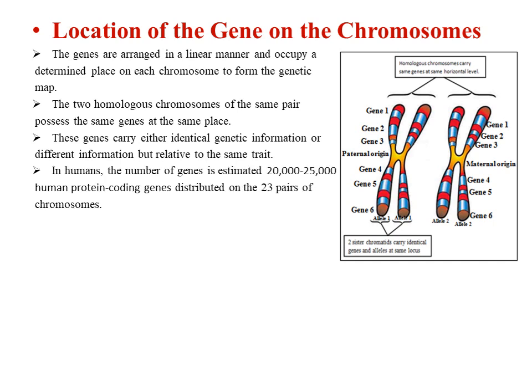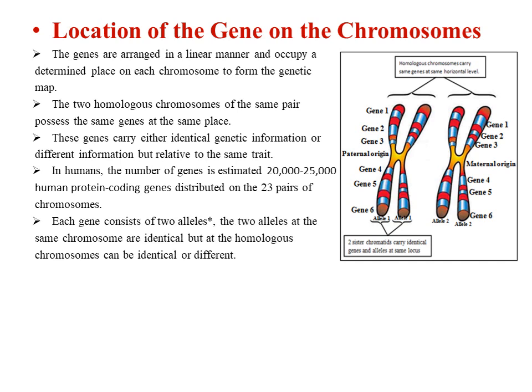Each gene consists of two alleles. The two alleles on the same chromosome — on the sister chromatids — are identical. However, with respect to homologous chromosomes, the alleles can be identical or different. Homologous chromosomes carry the same genes at the same horizontal level, while the two sister chromatids carry identical genes and alleles at the same locus.